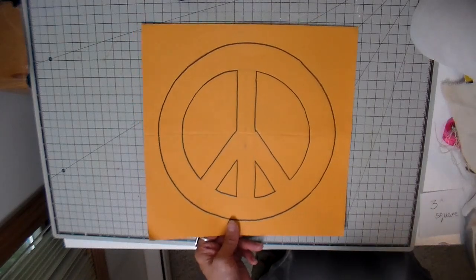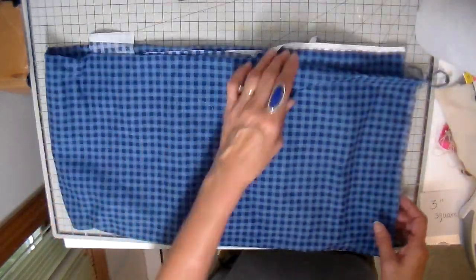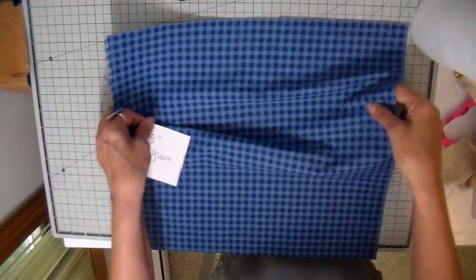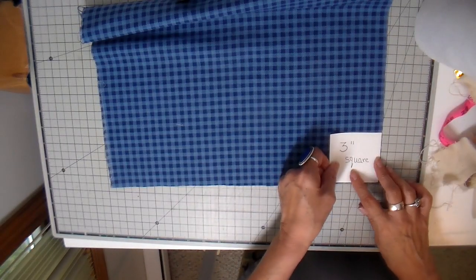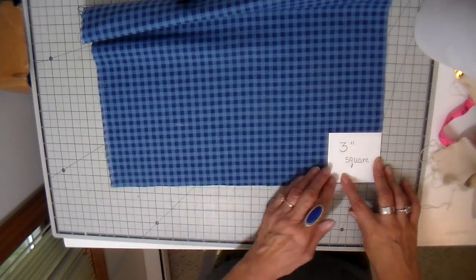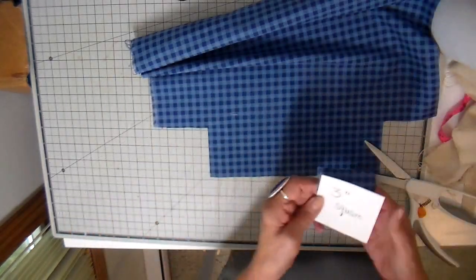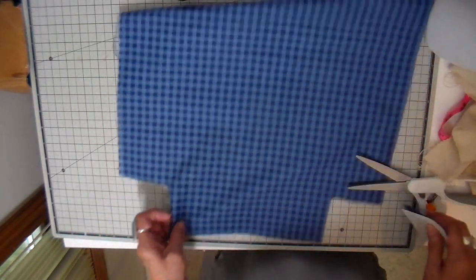This is the piece that I'm going to use for my peace sign. I just drew that peace sign out on a piece of paper and this blue check is my lining piece and I cut that a half an inch shorter so this is cut at 16 inches by 16 inches.